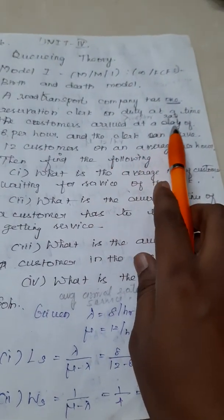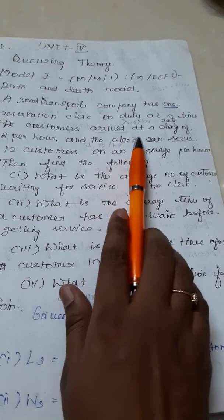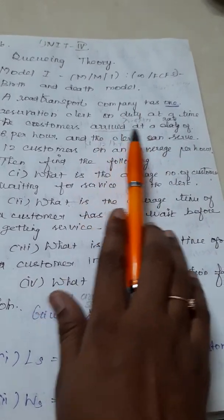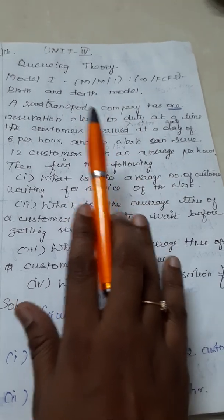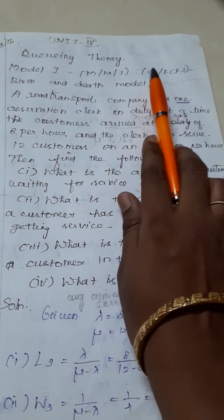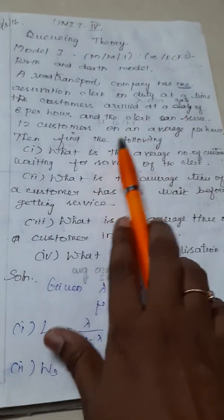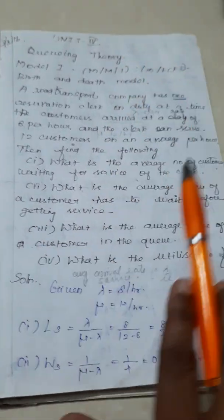The strength of the system is not defined. So whenever the capacity of the system is not defined, it is considered to be infinite population. So we have infinity/FCFS, first come first serve basis. We are going to solve the problem belonging to this model.